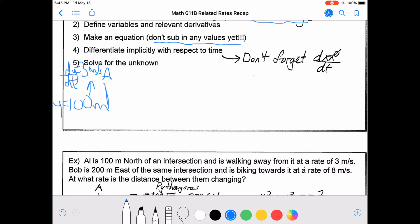Bob's 200 meters east of the same intersection, and he's biking towards it at a rate of 8 meters per second. So the distance is 200 meters, and the derivative would be negative 8 meters per second. The derivative here is negative because the quantity x is decreasing. The distance between Bob and the intersection is getting smaller.